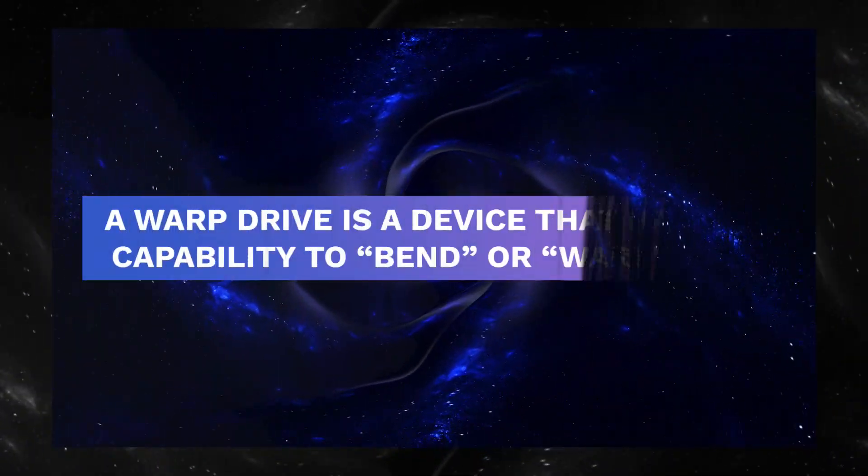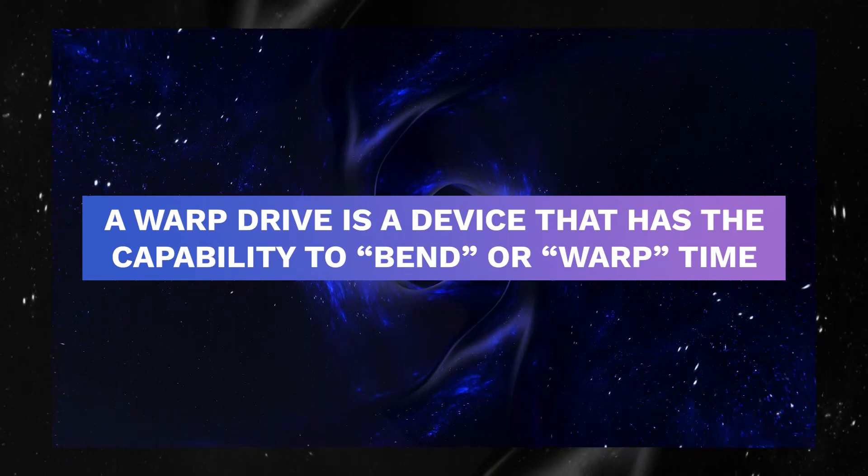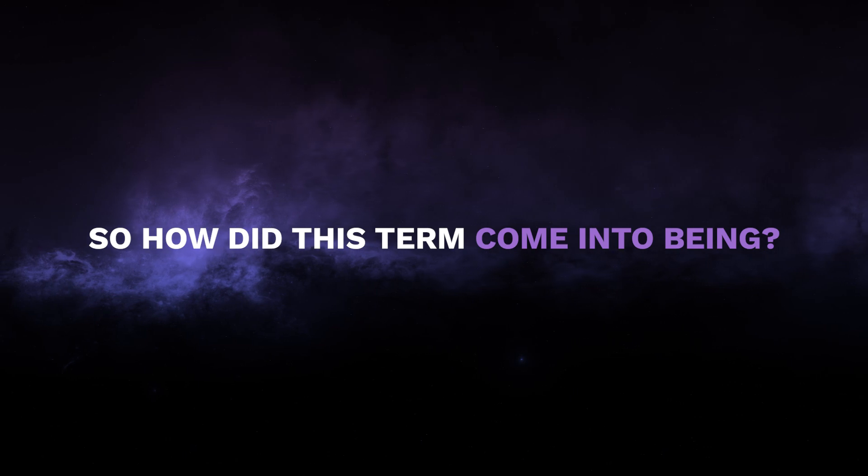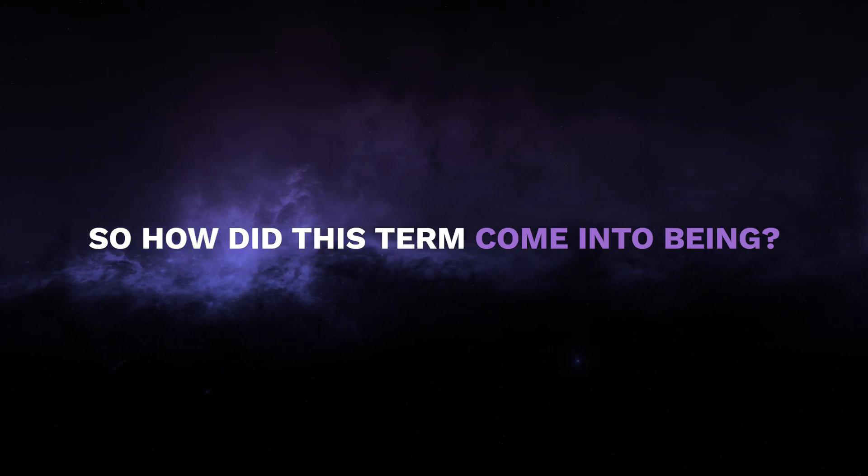Like we said earlier, a warp drive is a device that has the capability to bend or warp time, which allows it to move faster than the speed of light or to be more precise, move in a way that does not follow Newton's laws. So how did this term come into being? Time for a little history lesson, people.